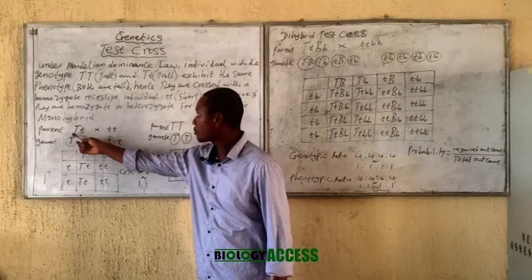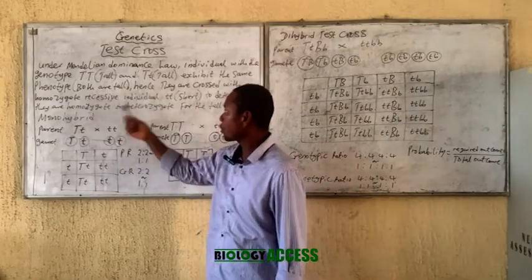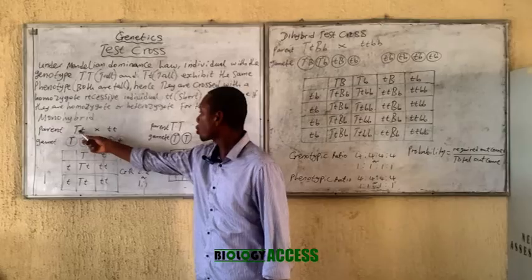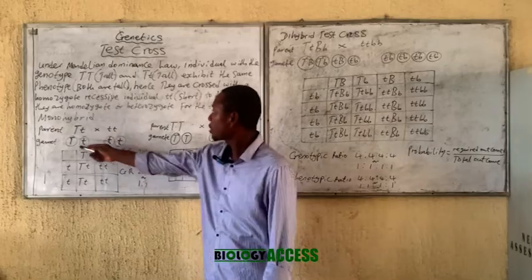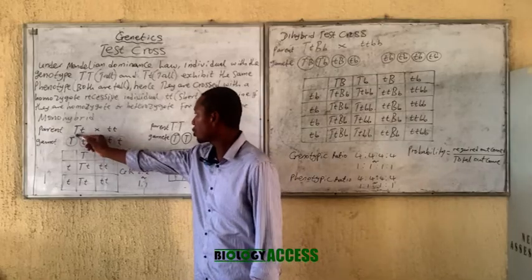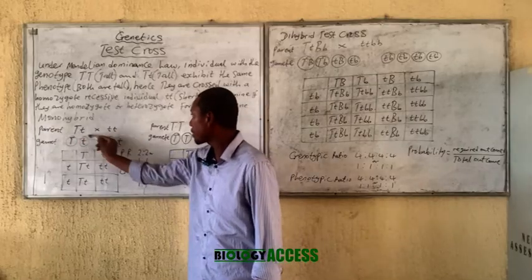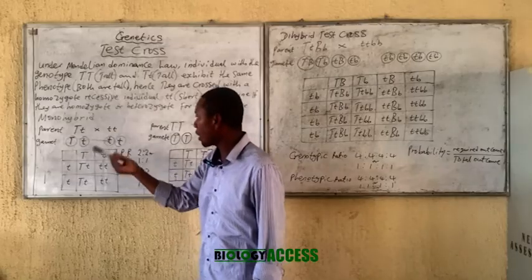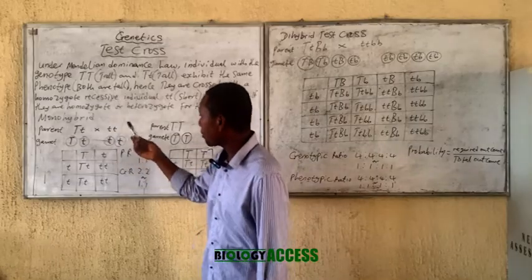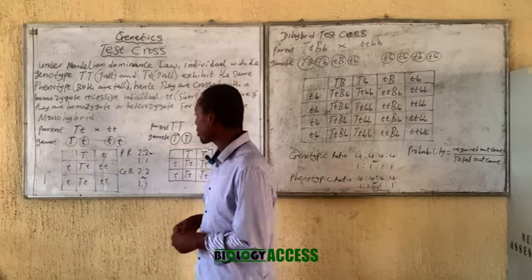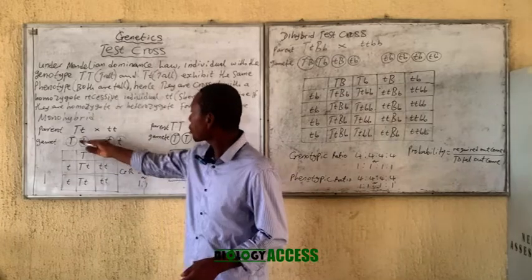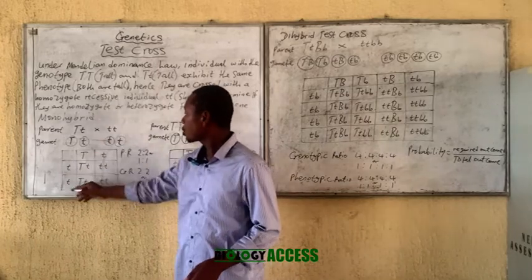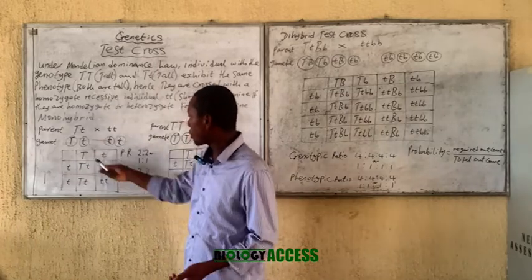Let's assume that we don't know the genotype of this tall plant, so we just cross it with the recessive. This is the genotype, these are the gametes — you can get that from my previous video on how to get gametes. Once you get your gametes, you put them into the usual Punnett square.